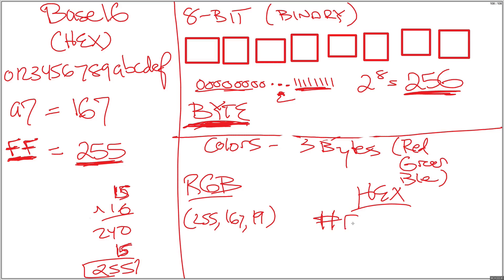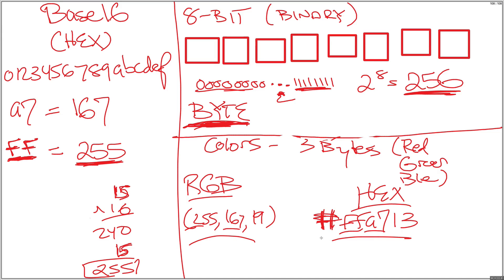255 we said was FF. 167 we know as A7. And then 19 would be 1 sixteen plus three ones, so that would be 13. These are equivalent — just different ways to represent the value of bytes in hex versus base 10. It's just shorter in hex because you can encode any byte into two hex characters.